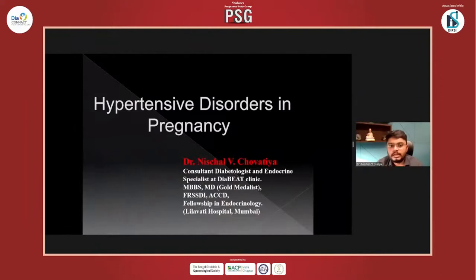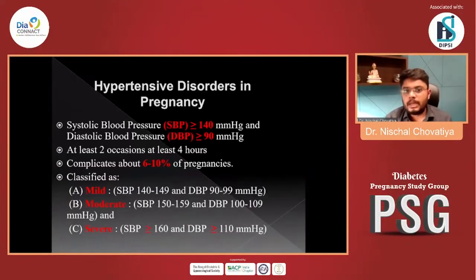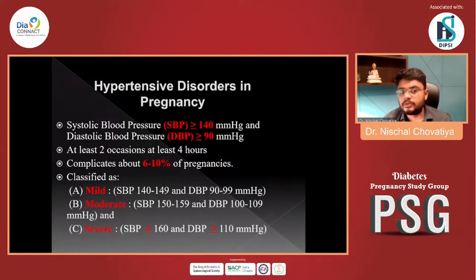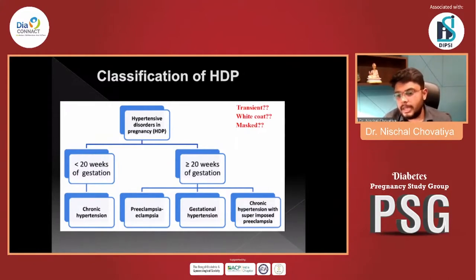Today's topic is hypertensive disorder in pregnancy. The older term 'PIH' has been made obsolete from current guidelines; we now call it hypertensive disorder in pregnancy. When systolic blood pressure is more than 140 mmHg and diastolic more than 90 on at least two occasions at least four hours apart, we call it hypertension in pregnancy. This complicates almost 6–10% of pregnancies. Classification: less than 20 weeks of gestation is chronic hypertension; more than 20 weeks is preeclampsia, eclampsia, gestational hypertension, or chronic hypertension with superimposed preeclampsia.